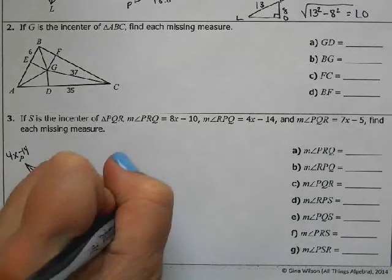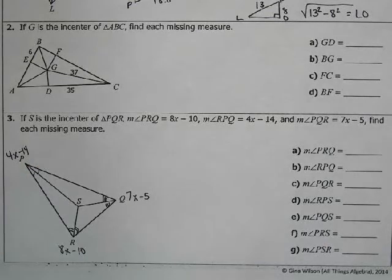So we want to find out each missing measure. So the first thing we know is that we have a triangle. All three angles of a triangle have to add up to 180 degrees. So that's how we're going to solve for x first.